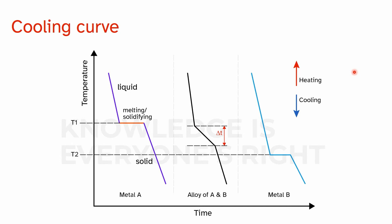The next important topic is the cooling curve. We represent two metals on a temperature-versus-time graph. Temperature going upward is heating and downward is cooling. If I have metal A in a molten liquid state and cool it, the temperature drops until it reaches the solidifying point, where the temperature remains constant until all the liquid is converted into solid. This is called the solidifying temperature, or melting point when heating.